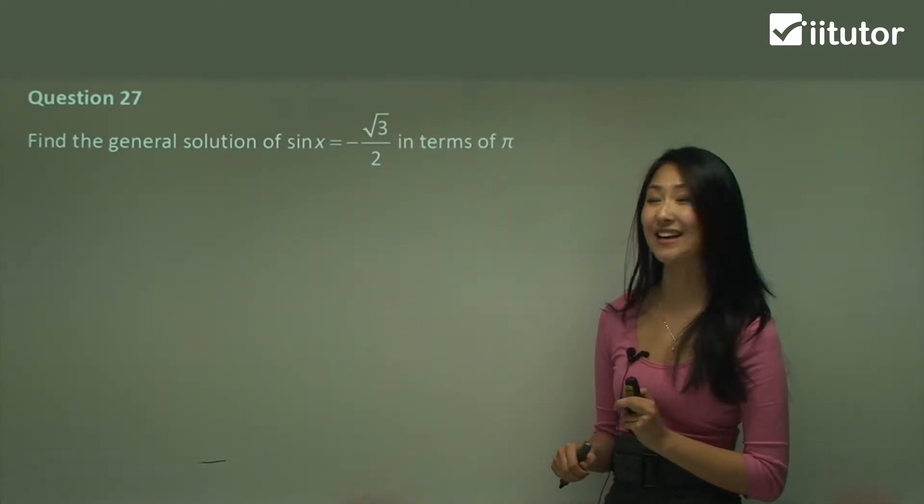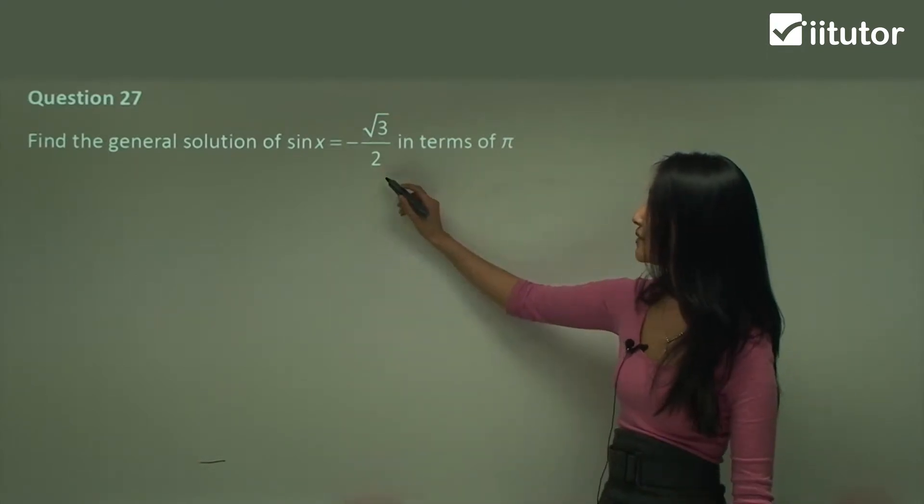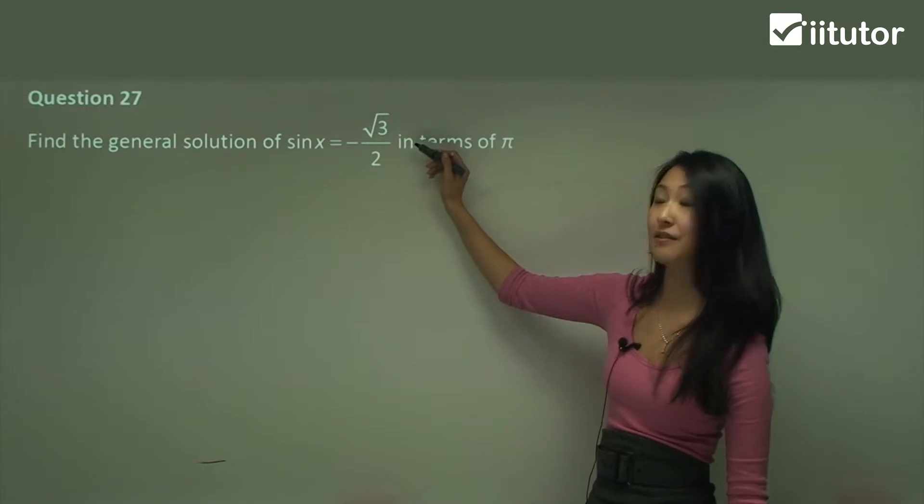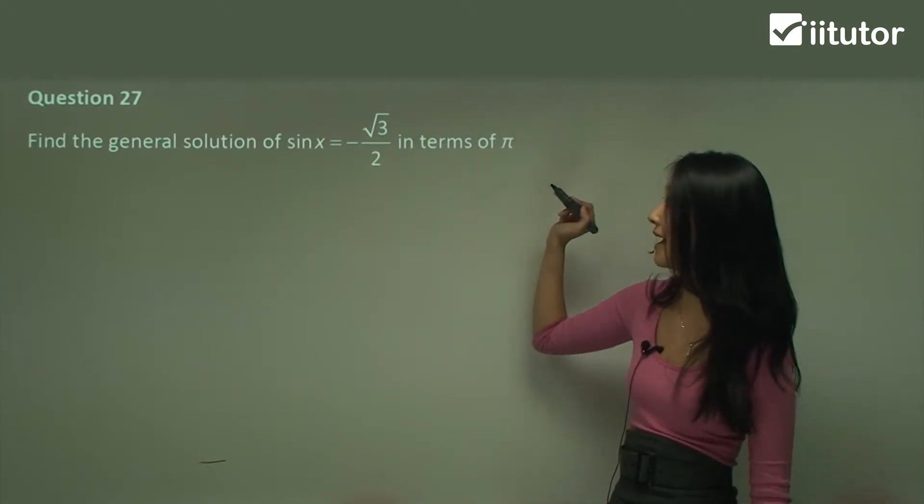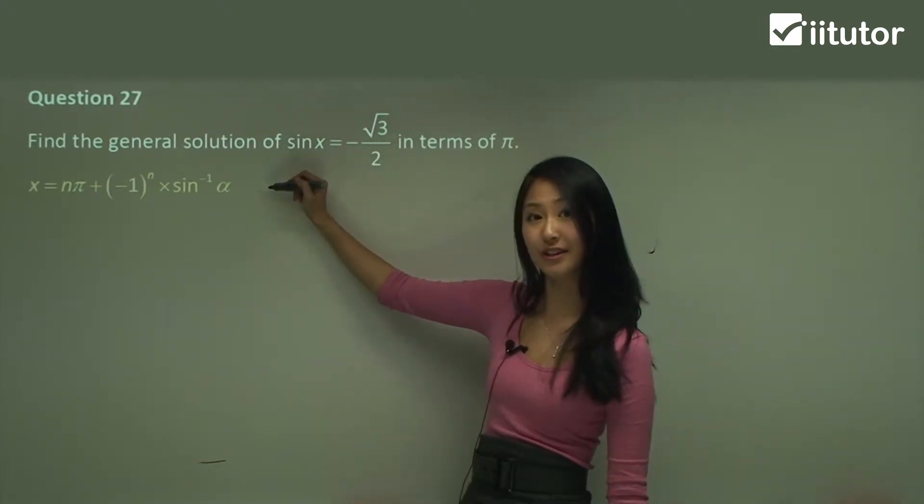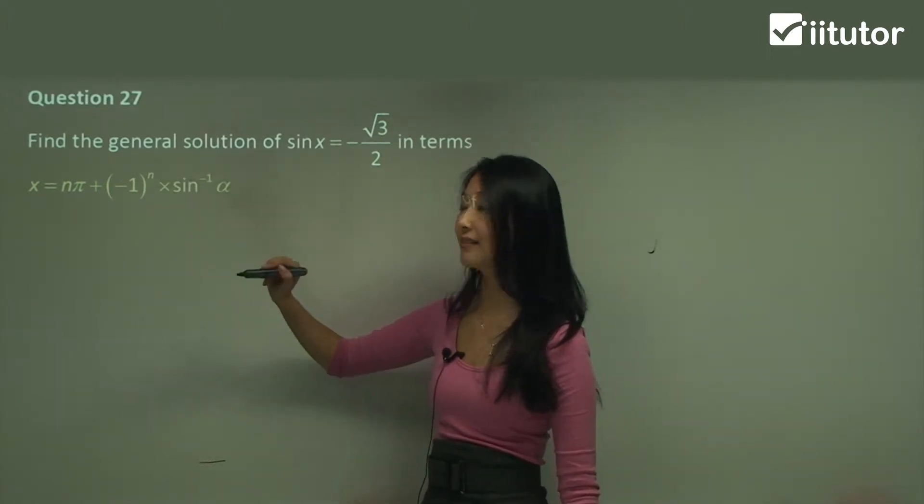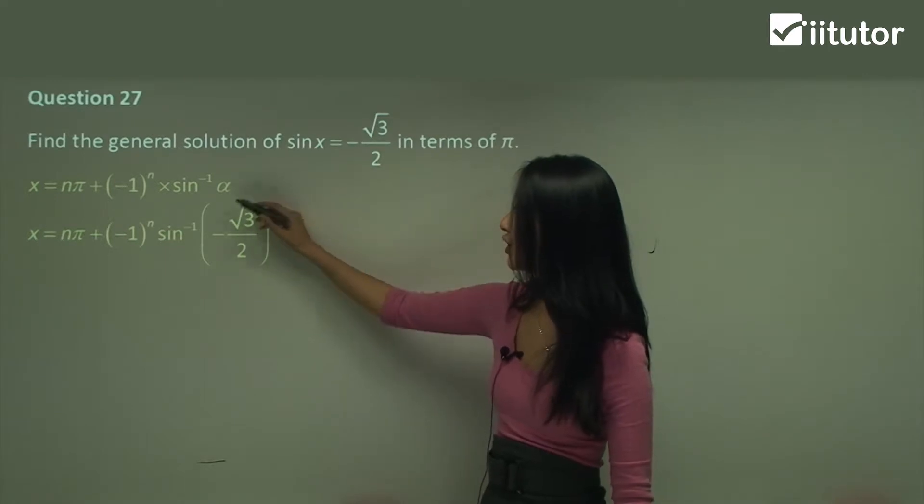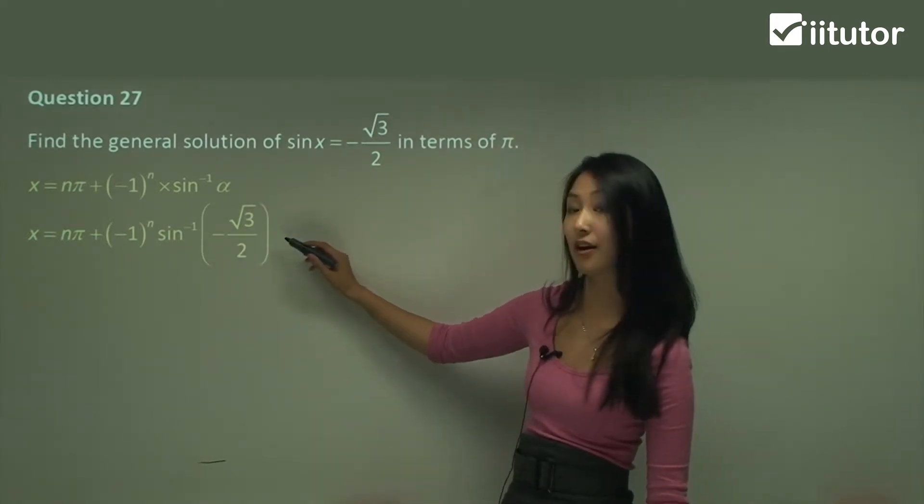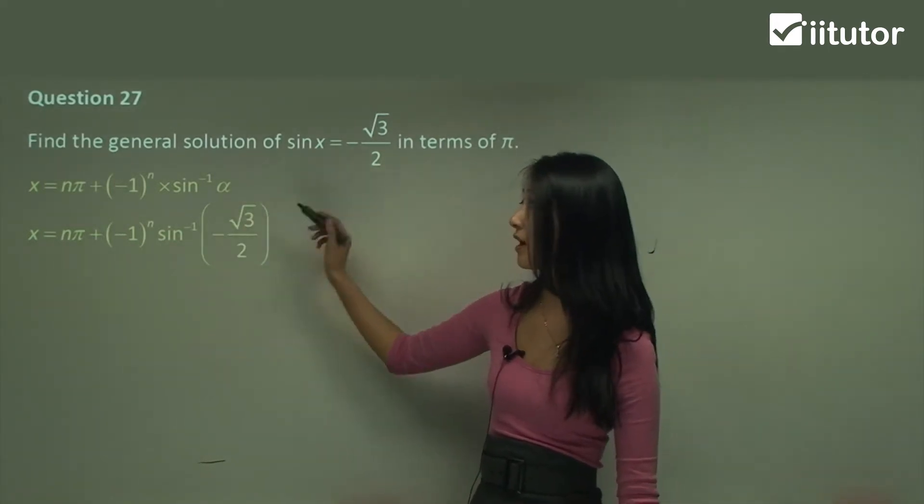Alright moving on to 27 now. So find general solution of sine x equals to negative square root 3 on 2 in terms of pi as well. So this is our equation here, n pi plus negative 1 power of n. Now substitute in negative square root 3 on 2. We just work that out.